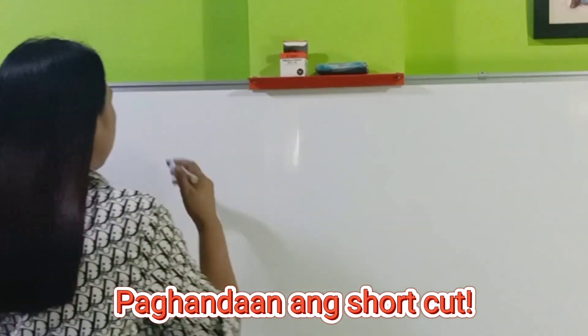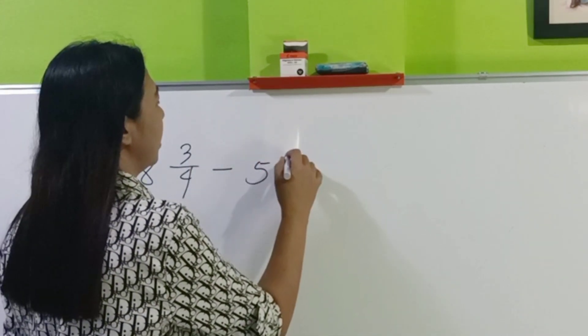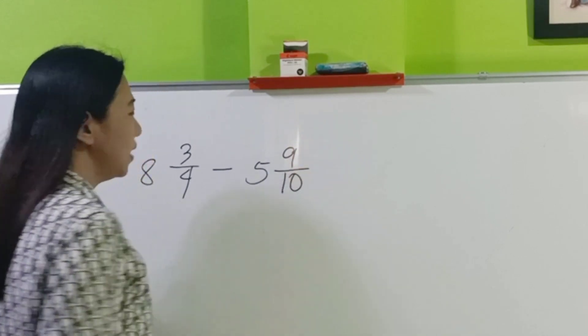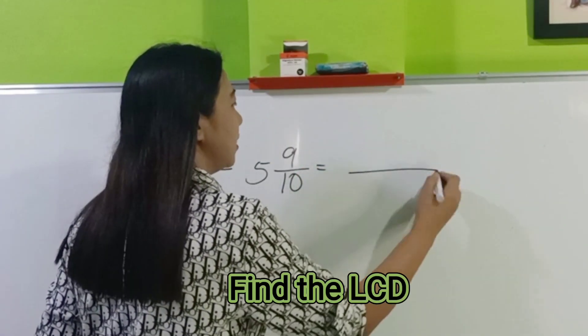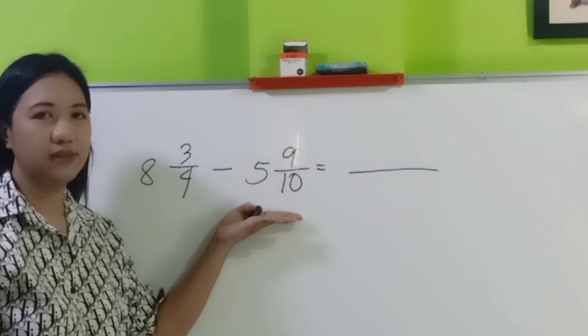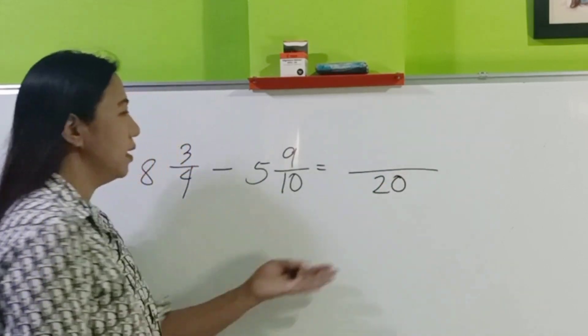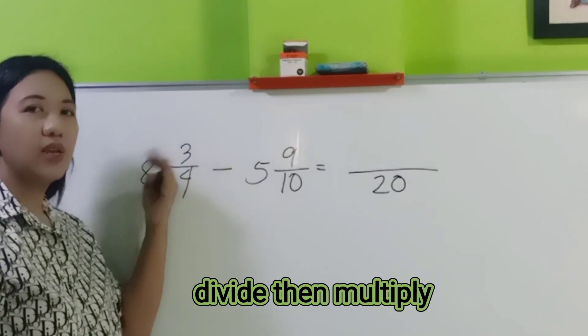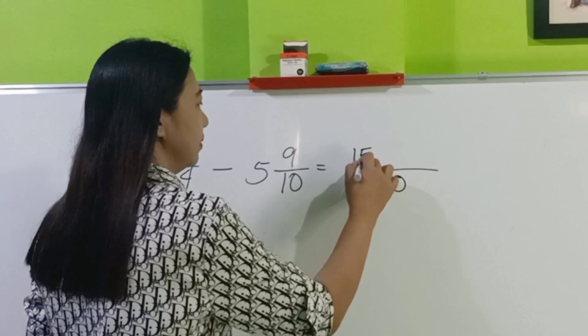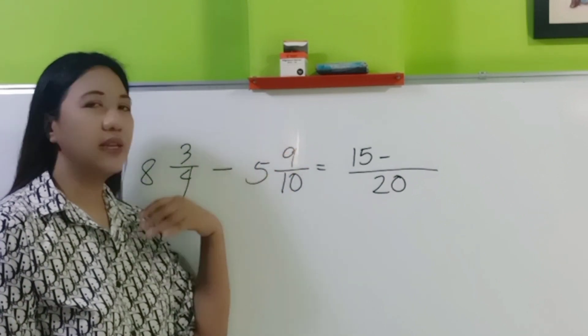Let's now proceed to shortcut. Are you ready? This time, let's do it horizontally. First, find the LCD of 4 and 10. So the LCD is 20. Good. And then, 20 divided by 4, 5 times 3 is 15. Next, 20 divided by 10 is 2 times 9 is 18.